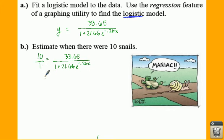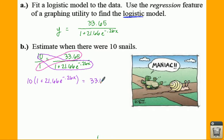This is over 1. This is a proportion, and some of you guys have had a little difficulty solving these. What we're going to do is you're going to cross-multiply and then set them equal to each other and solve the equation. So we're going to get 10 times (1 plus 21.66 e to the negative 0.26x) equals 33.65.